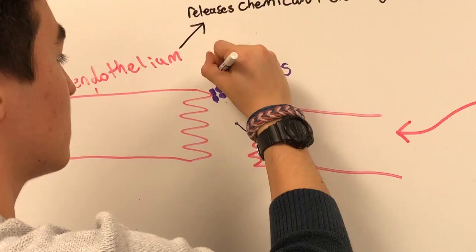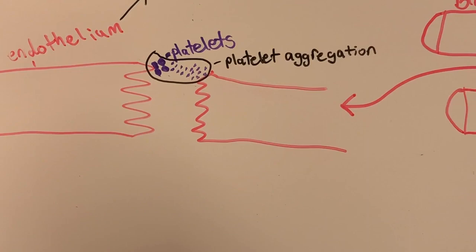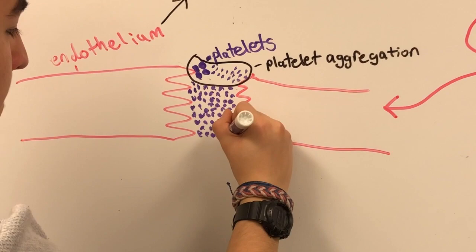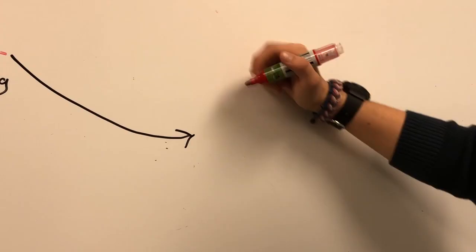More platelets begin to attach to each other. This is known as platelet aggregation. A positive feedback loop begins, stimulating further platelet aggregation and releasing more chemicals and clotting factors, eventually creating a platelet plug.